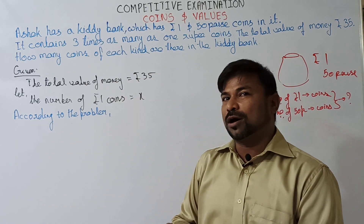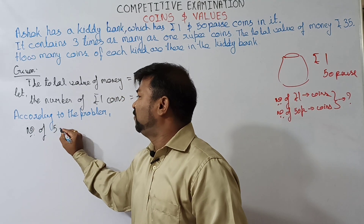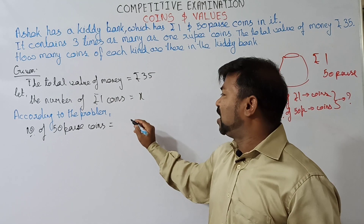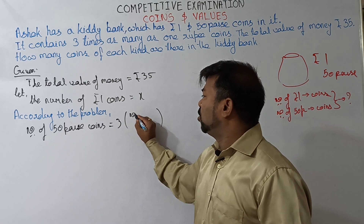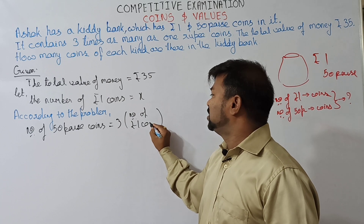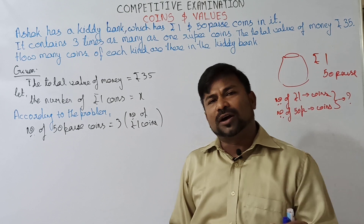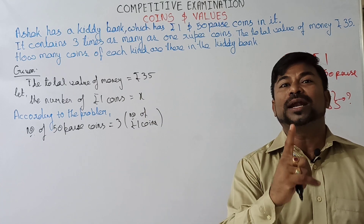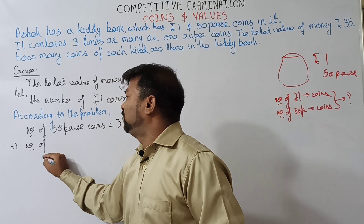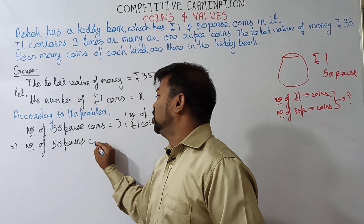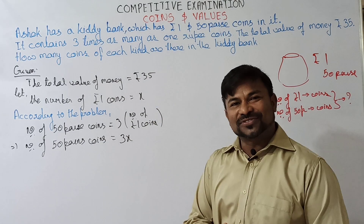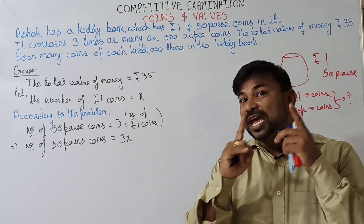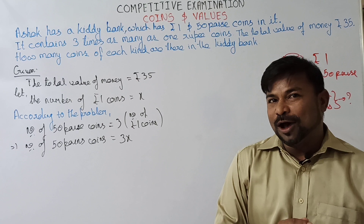Number of 50 paise coins equals three times of the number of 1 rupee coins. This is the relation given. Number of 50 paise coins are nothing but three times the number of 1 rupee coins. Now let us assume the number of 1 rupee coins is x. So, which implies the number of 50 paise coins is nothing but 3x. Number of 1 rupee coins are x and number of 50 paise coins are 3x, according to the relation given in the question.